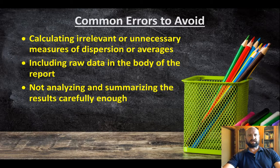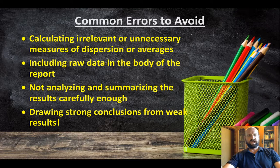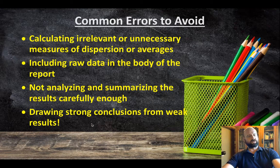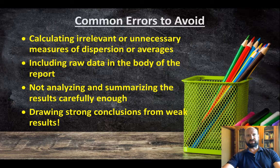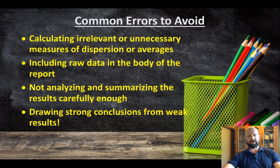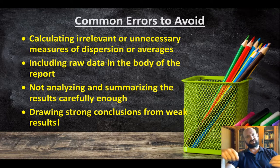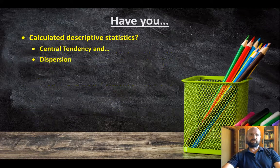Here are some things for them to avoid. This last one is what we see all the time: drawing strong conclusions from weak results. You'll also find students, if they don't get the results they wanted or the results that replicate the original, they get really disappointed. And that's a really good way to teach about researcher bias — they had this desire to get these results and were disappointed, so how might that have affected their design of the experiment?